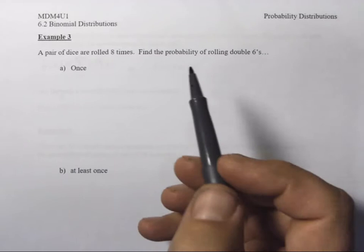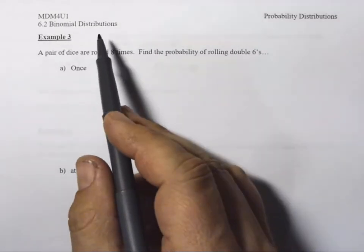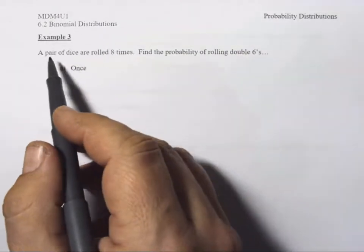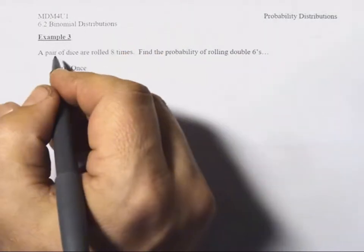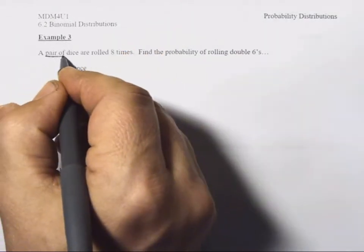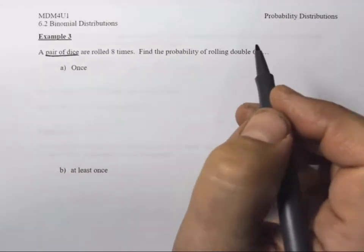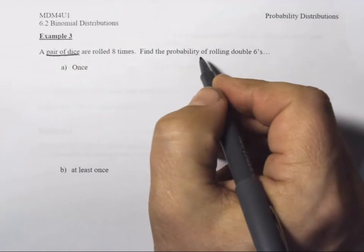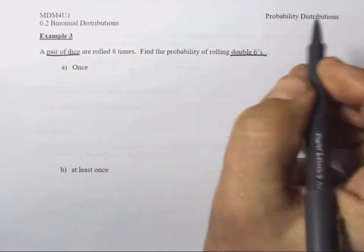Next page on our lesson 6.2 binomial distributions — example 3. We have a pair of dice, which means we're going to get a sum. Two dice means a sum, and they're rolled eight times. Find the probability of rolling double sixes.